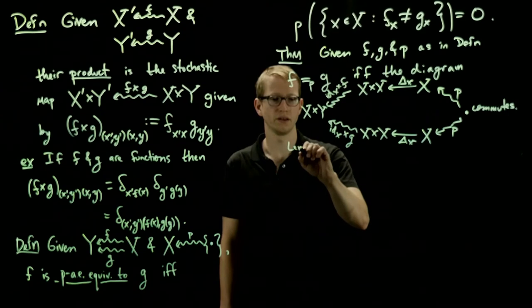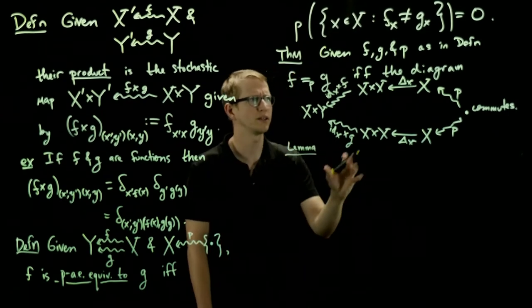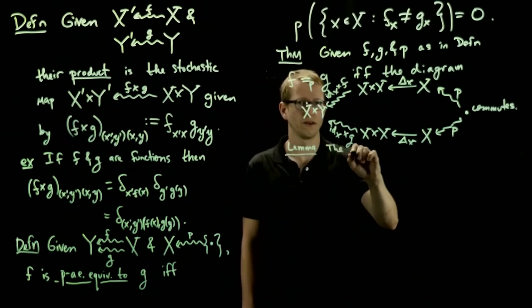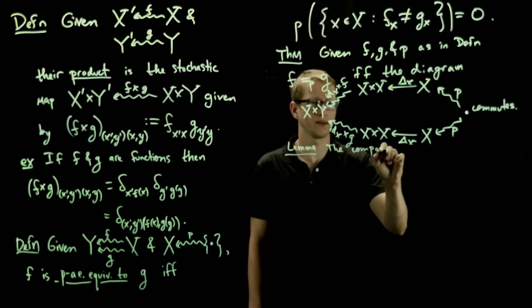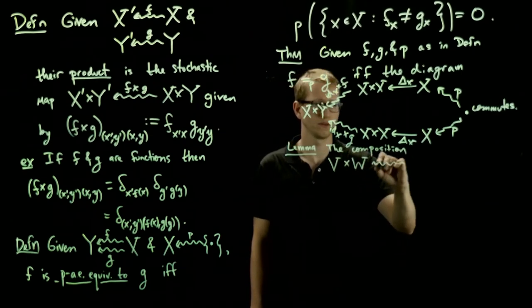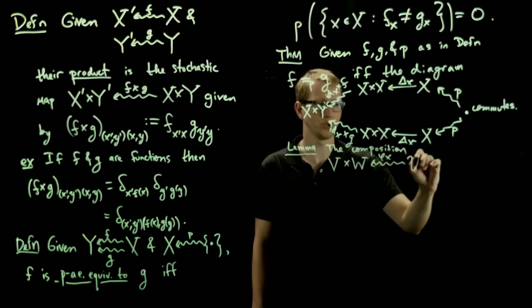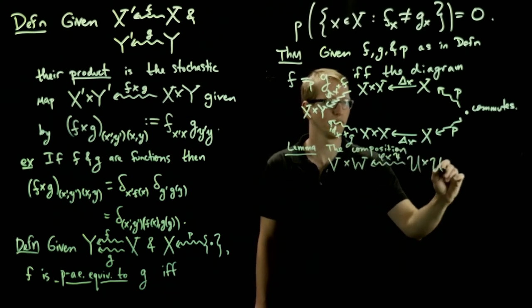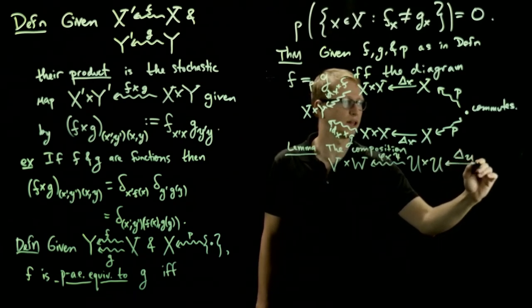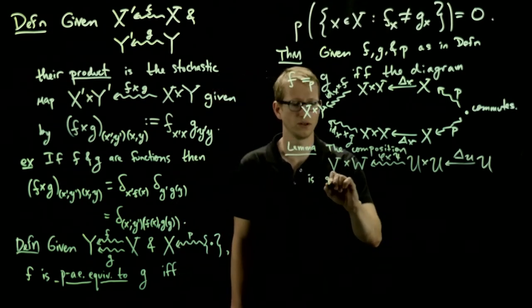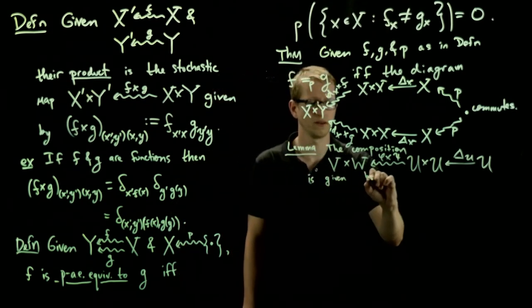Okay, so before we prove this, we'll have a little bit of a lemma just to make the calculation a little bit easier. And that lemma is the composition of two maps, of two stochastic maps that are of this form. So if I have a map φ from u into v and a map ψ from u into v, and I precompose with this diagonal map, then this composition is given by the formula.